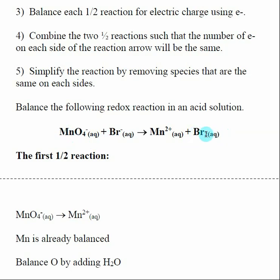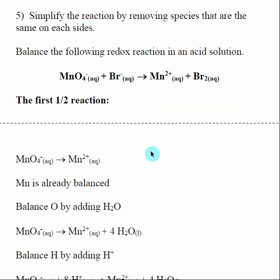Let's balance this overall redox reaction as an example. The first thing is to break it into the two half reactions, looking at species other than oxygen and hydrogen. We have manganese on the left and manganese on the right — that's one half reaction. We have bromine on the left and bromine on the right — that's the other. Additional oxygens, electrons, and other species will be added during balancing.